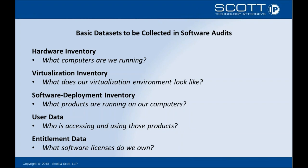Not on that list is an additional category: use characterization information — knowing how products are being used. If you have certain machines used for development and test purposes, for example, you might be able to license those deployments under less expensive licensing models than would apply to your production deployments used in a customer-facing environment or for other internal business operations.